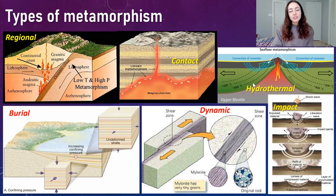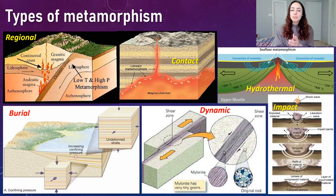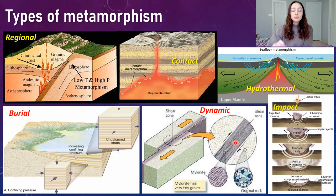There are many other types of metamorphism beyond regional and contact. Burial metamorphism occurs when deep burial of sediments causes high temperatures and pressures — relevant to the fuzzy line between diagenesis and metamorphism, as we'll see when discussing whether coal is metamorphic. Dynamic metamorphism occurs in shear zones, where rocks sliding against each other generate enough pressure and temperature to deform those rocks and impart metamorphic characteristics.